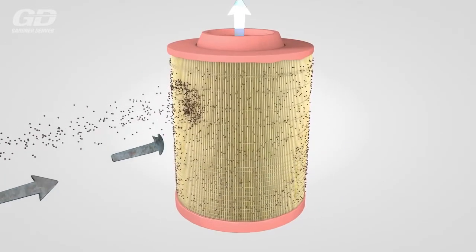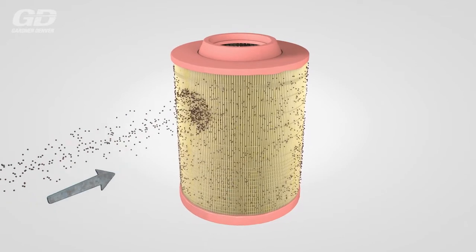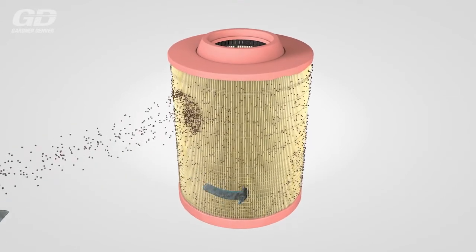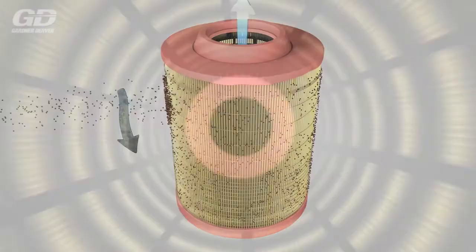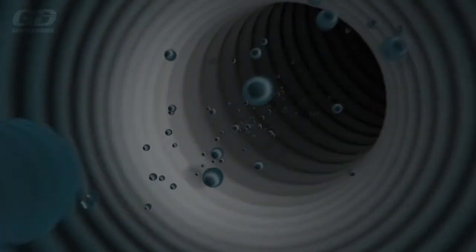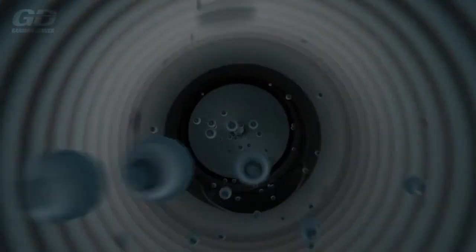But Gardner Denver air filters not only hold back the coarse particles, they also stop the smallest troublemakers from entering the system and so reduce the strain on the air oil separator and oil filter installed downstream.